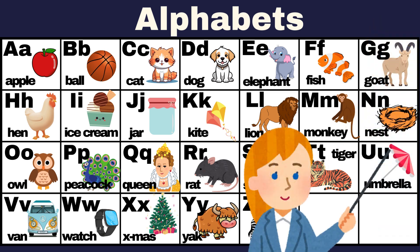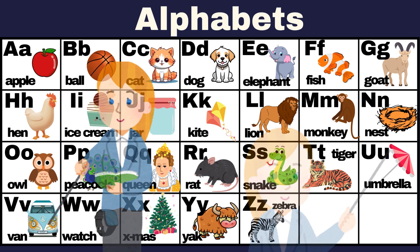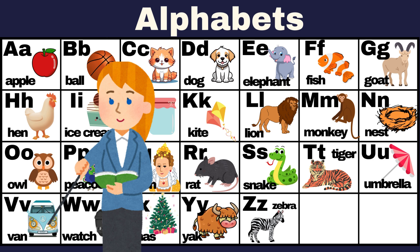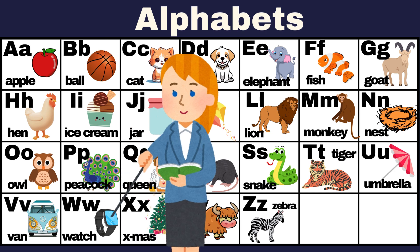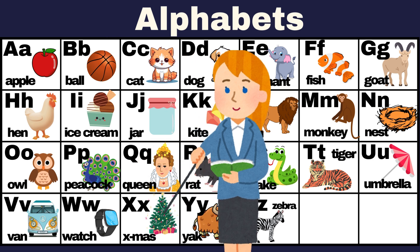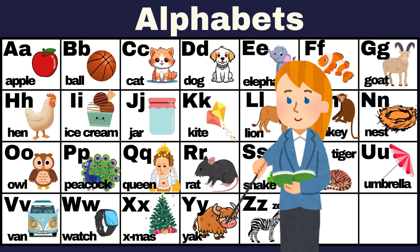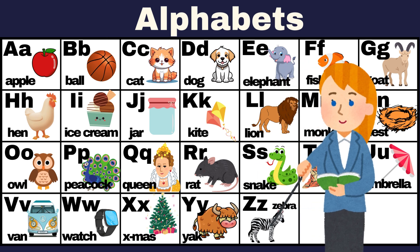U for Umbrella. V for Van. W for Watch. X for Xmas. Y for Yak. Z for Zebra.